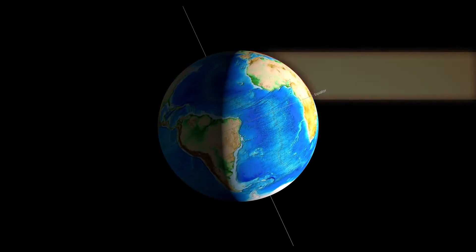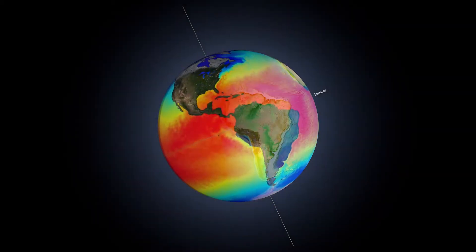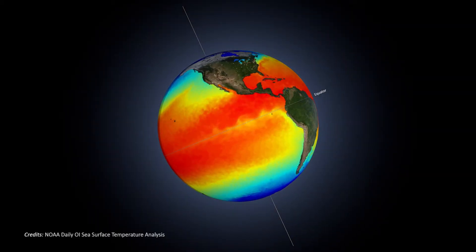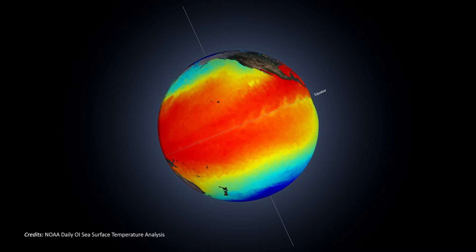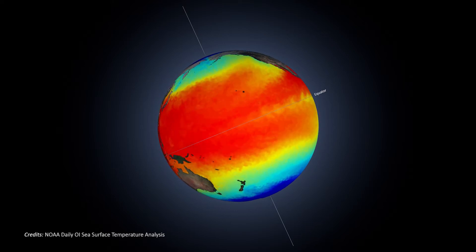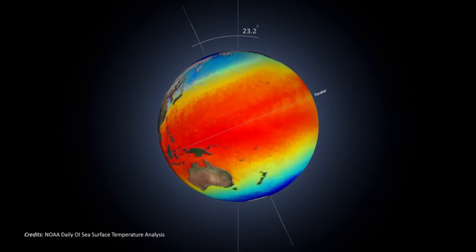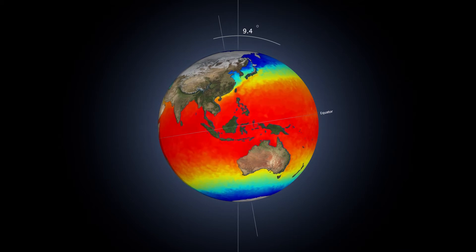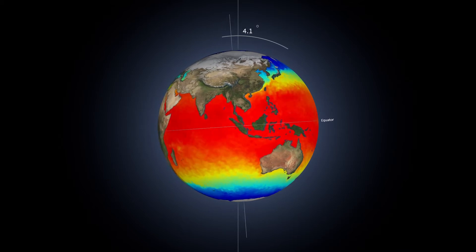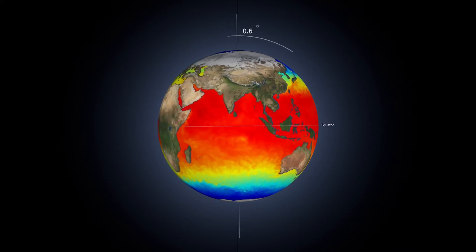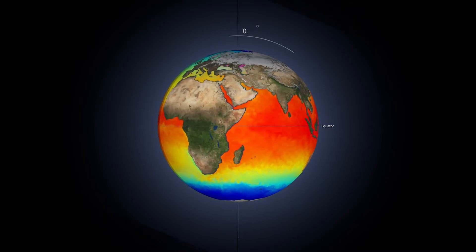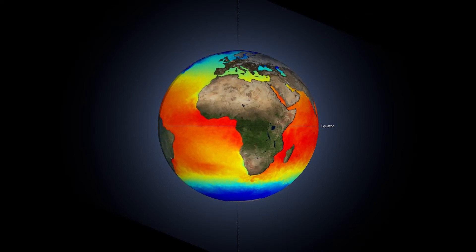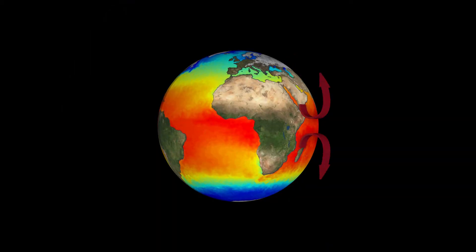This effect can be seen in the global sea surface temperature. Higher temperatures are found at the equator, and lower temperatures at higher latitudes. Heat differences drive the circulation of both the atmosphere and the oceans, and this has a significant impact on the climate, and therefore on all life on Earth.